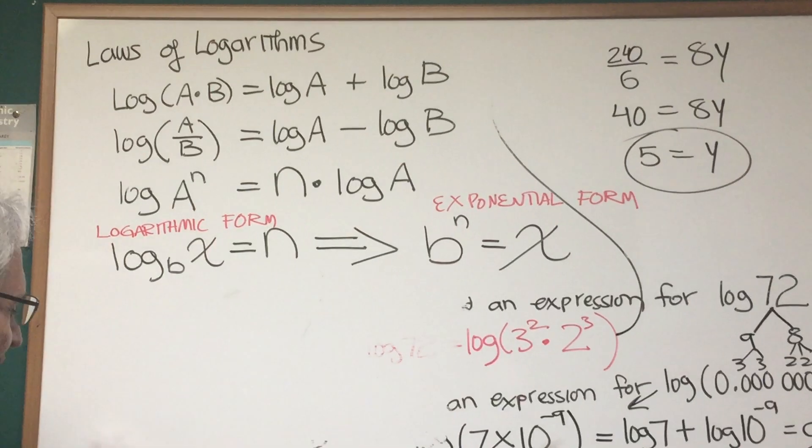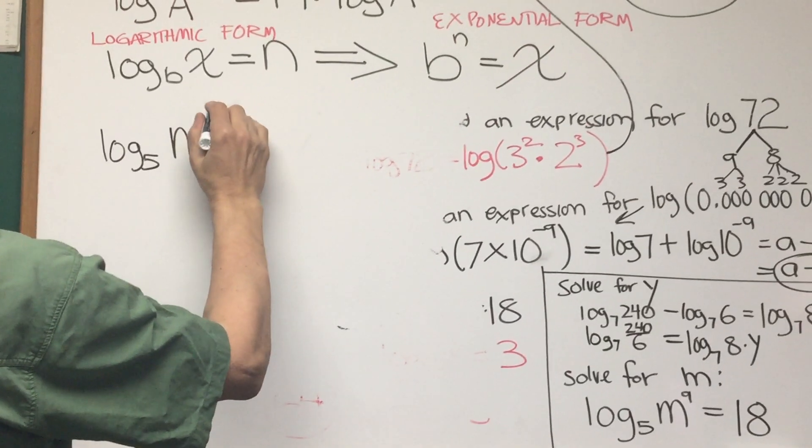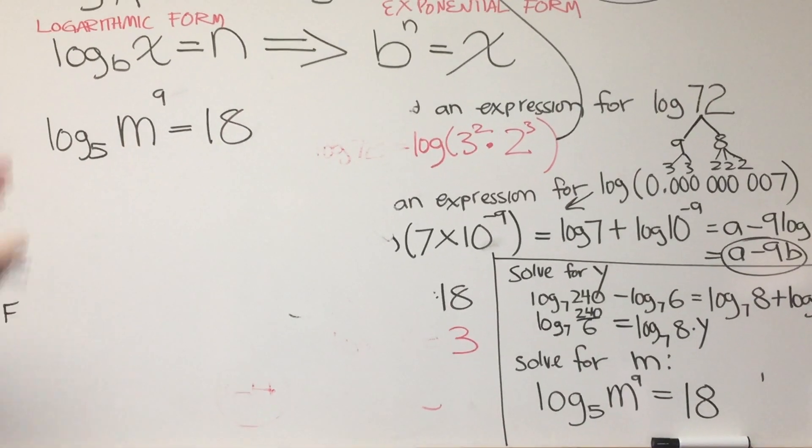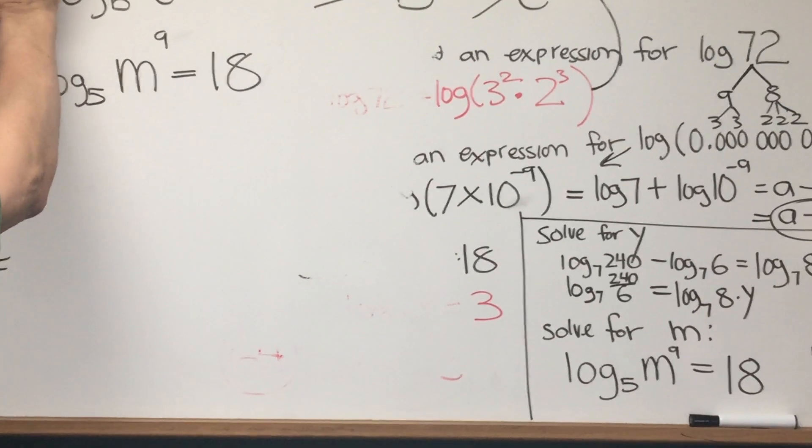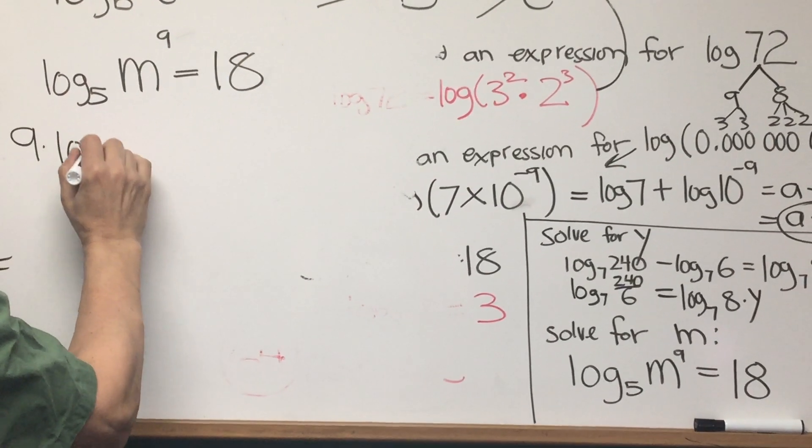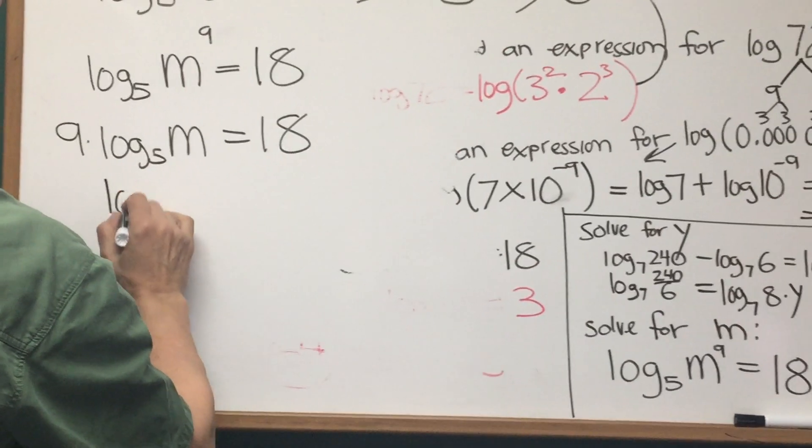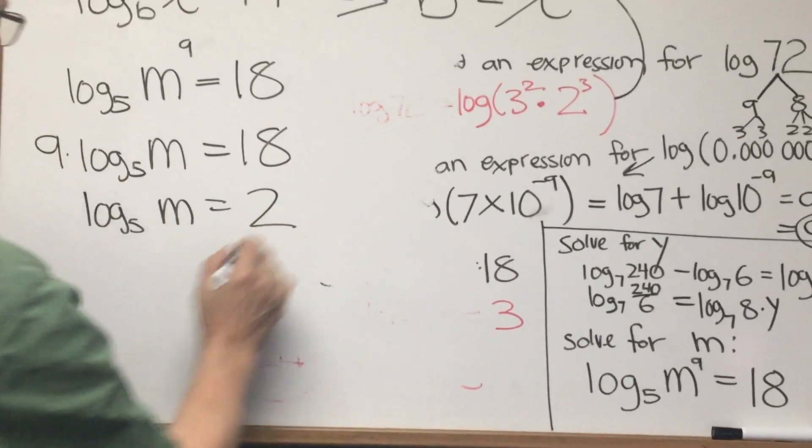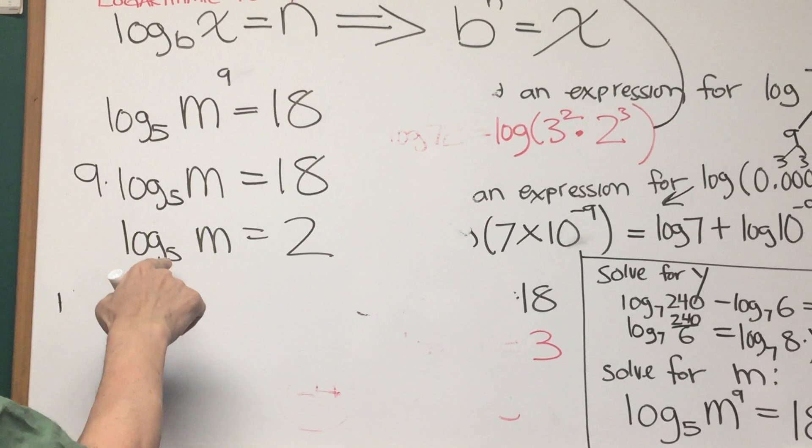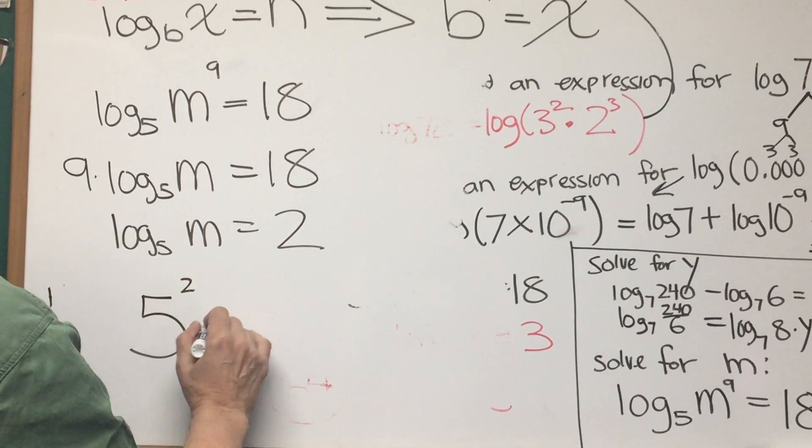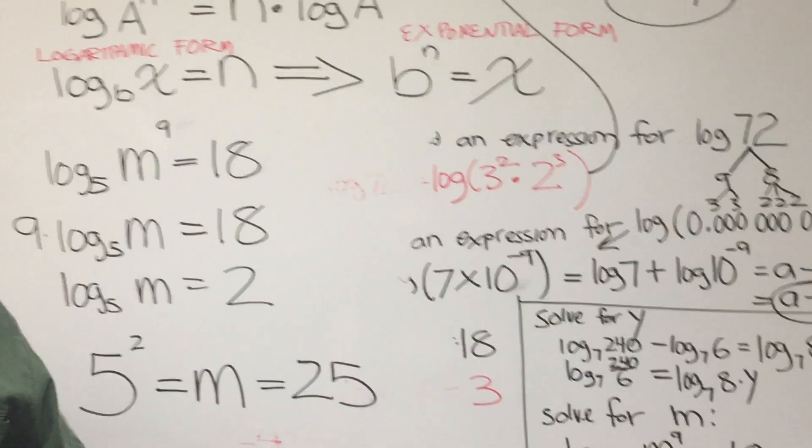So now let's create some space to do this final logarithmic problem. Solve for m: Log base 5 of m to the 9th is equal to 18. Now we're going to use, again, the same suite of laws of logarithms. Log base 5 of m to the 9th, the 9 can be brought down by this third rule of exponentiation as a coefficient. 9 times log base 5 of m is equal to 18. We can divide both sides by 9 to get log base 5 of m is equal to 2. And now we're going to use the conversion from logarithmic form to exponential form. The base is 5, the exponent is 2, the resulting number is m, and 5 squared is 25. So there's a little sampling of the kind of logarithmic problems you would encounter on the DAT.